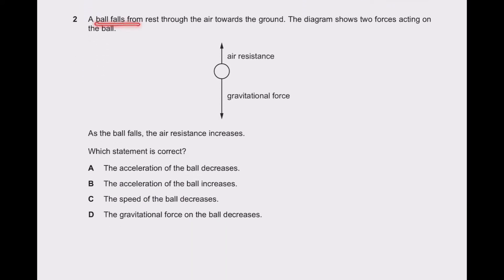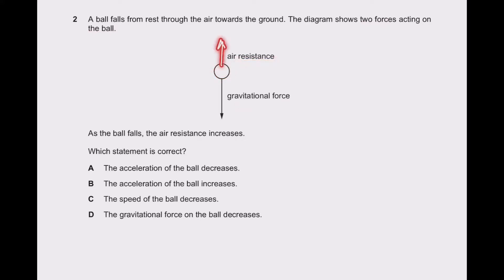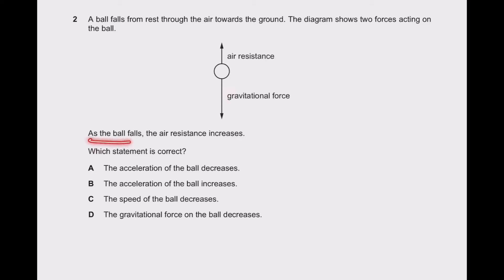Second question: a ball falls from rest through the air towards the ground. The diagram shows two forces acting on the ball — one is the air resistance which is in the opposite direction to the motion, and the ball is falling down due to gravitational force. As the ball falls, the air resistance also increases. Which statement is correct?